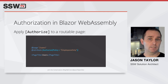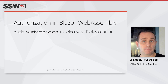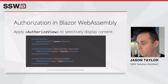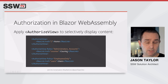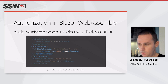The AuthorizeView component allows us to selectively display content. In a nav menu example, any authenticated user can see the home link. For the counter link, you must be in the Administrators or Accounts role. For the users link, you must meet the requirements of the employees-only policy. We can also handle the not-authorized case — showing just a login link — demonstrating how AuthorizeView is quite useful in customizing the content.